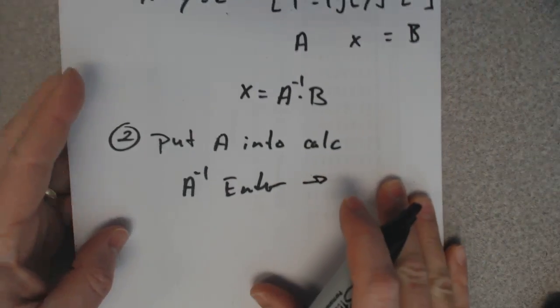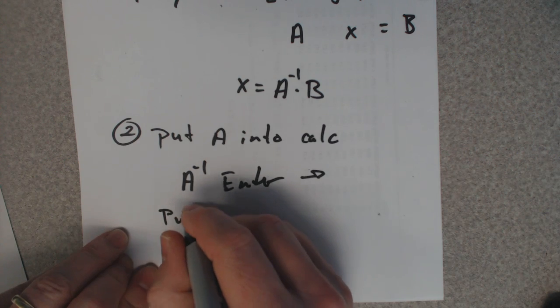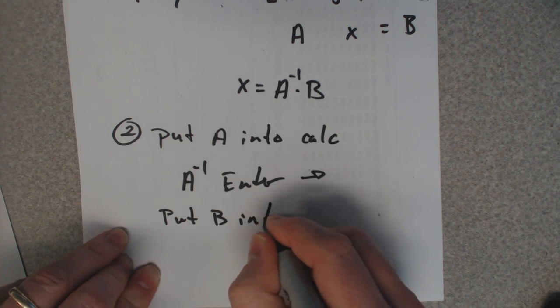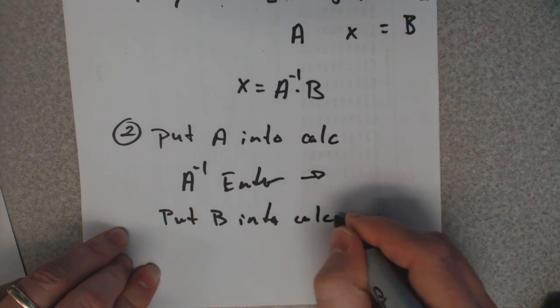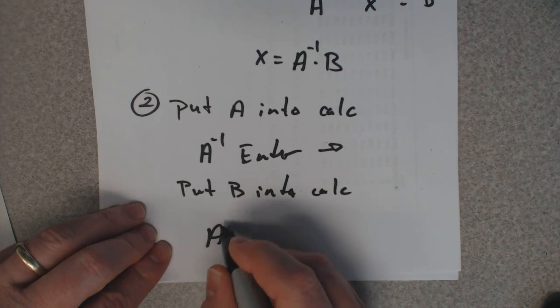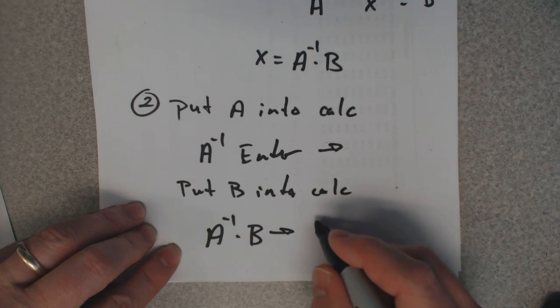Or you can put A into the calculator, put B into the calculator, and then type A inverse times B. It just gives you the answer.